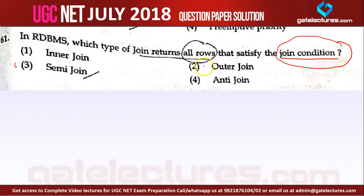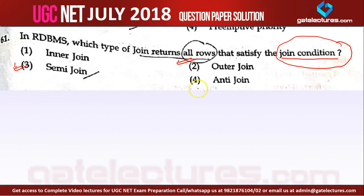Outer join is of three types: left outer join, right outer join, and full outer join. The problem with outer join is we do not take the join operation according to both tables — in left outer join we return only those rows which are in the left table and matching with the right table; in right outer join we take values from the right table matching with the left table. In semi join, we take values only from the first table, ignoring all values from the right table. Anti join is totally opposite of natural join — in anti join we take those values of the common attributes which are not matching the condition.